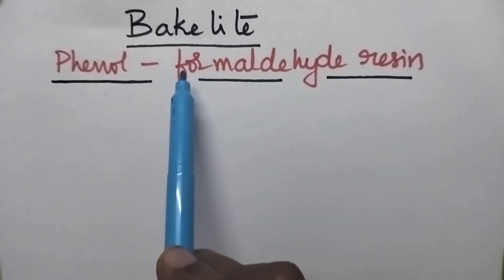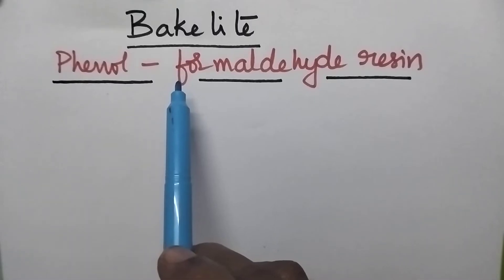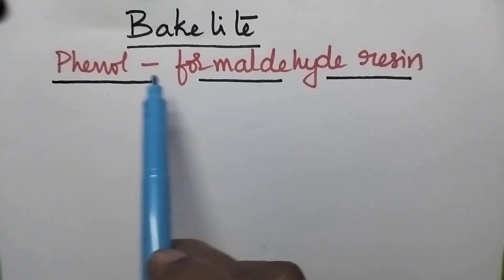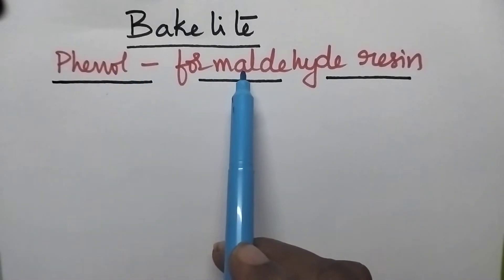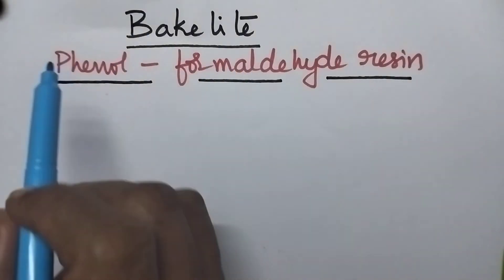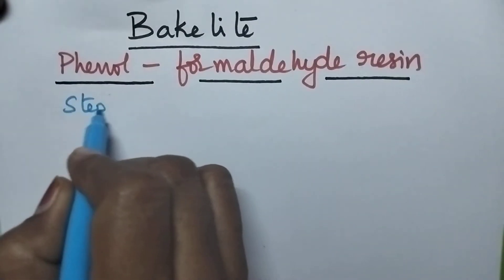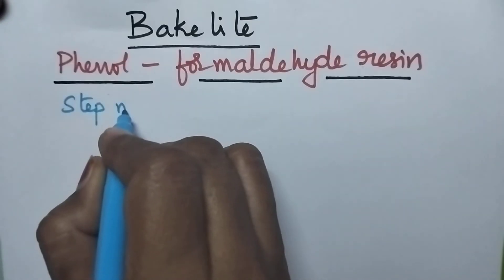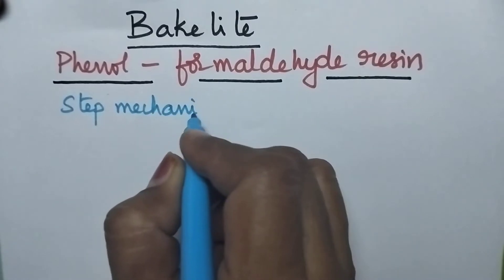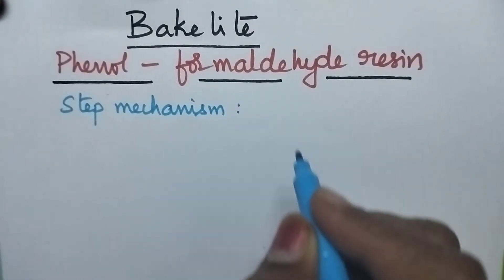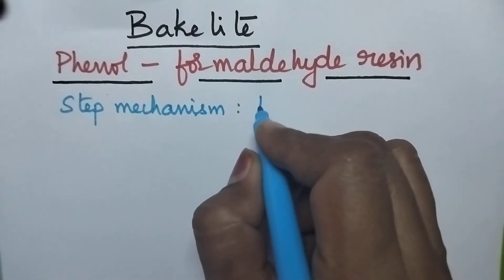Bakelite can be prepared by the condensation polymerization of phenol and formaldehyde. It follows a step mechanism, and especially it involves three steps.